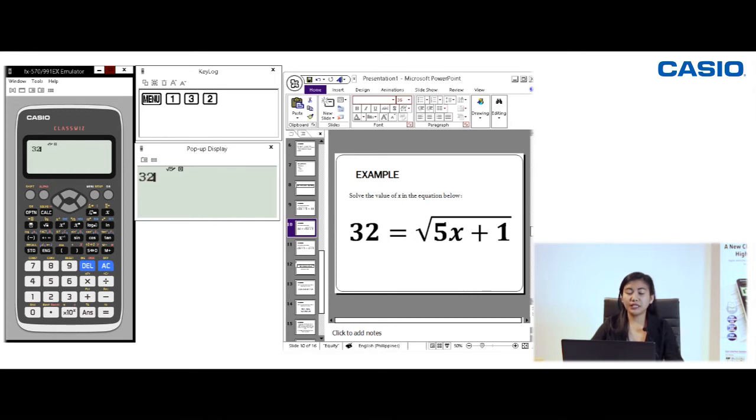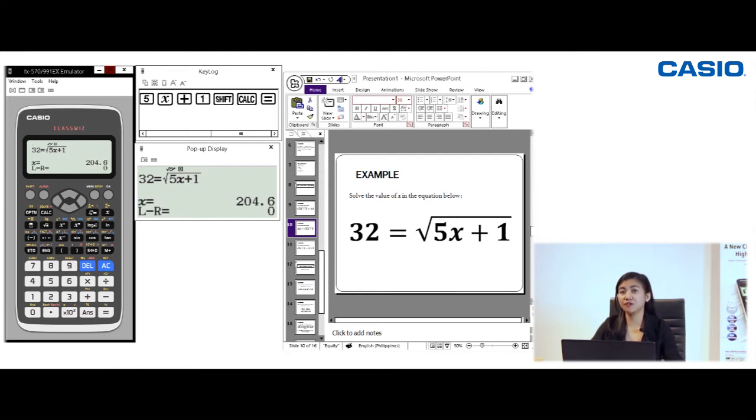So 32 is equal to, so the equal sign will be alpha then calc, equals the square root of 5x plus 1. So square root 5x, operation plus, and then 1. Then to see the value of x, we're going to press shift and then calc. So x must be equal to 204.6. That means for this equation to become true, x must be equal to 204.6.